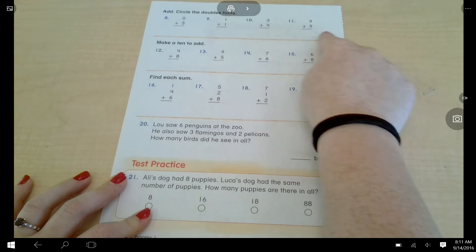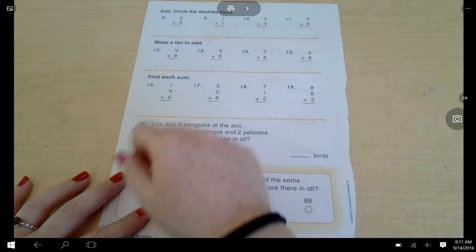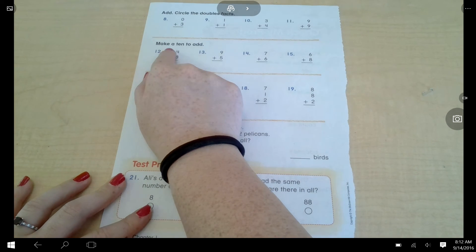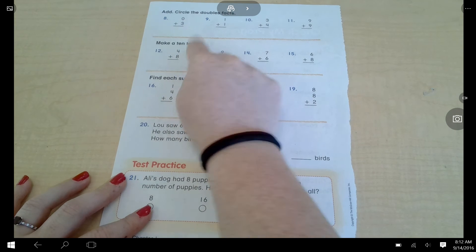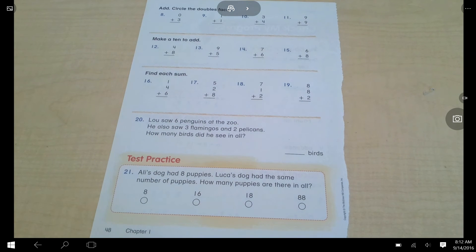You should have this first row completed. Now we're going to look at the next row. It says make a ten to add. I'm going to show you how you're going to do that today because it's written differently than when we did it before. When we did it before, we had a special box to help us out.